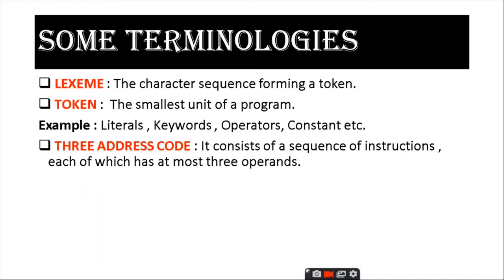Three address code consists of a sequence of instructions, each of which has at most three operands. For example, A is equal to B plus C — where A, B, C are operands and equals and plus are operators.